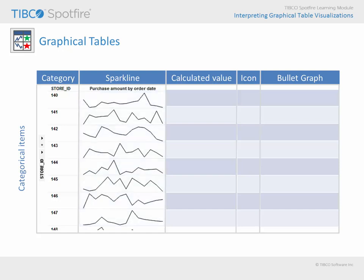Sparklines are useful for examining and comparing trends. Here we see purchase amounts at each store trending over time. Calculated values can reflect an aggregation or the result of a custom expression, and rules can be applied in order to conditionally change font type or color. Note that these average purchase values are flagged with a red font when they dip below a threshold of $475.